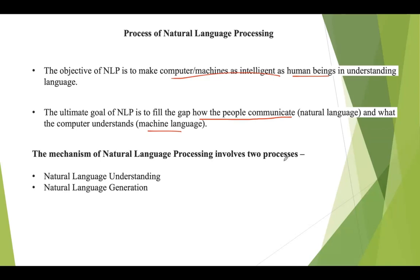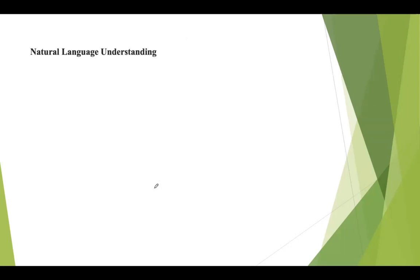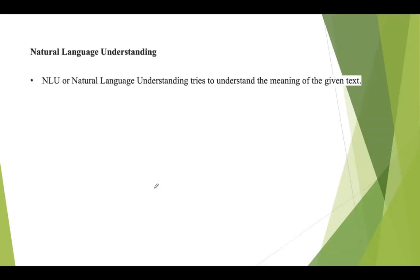The mechanism of natural language processing mainly involves two processes: one is natural language understanding and the second one is natural language generation. In case the text is composed of speech, speech-to-text conversion is performed. Natural language understanding, also referred to as NLU, always tries to understand the meaning of the given text.